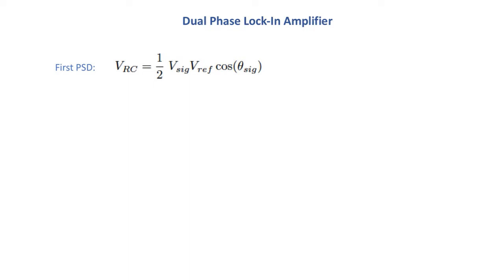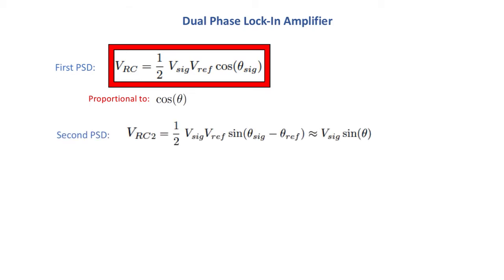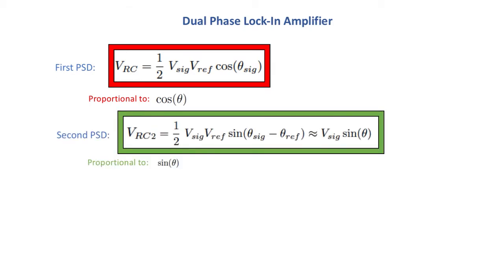So again we have our first phase sensitive detector output which is proportional to cosine θ and we have the second one which is proportional to sine θ and what we could do now is to find three variables.